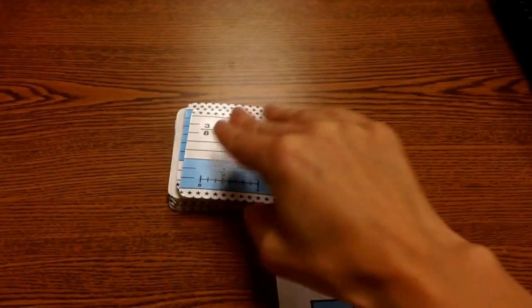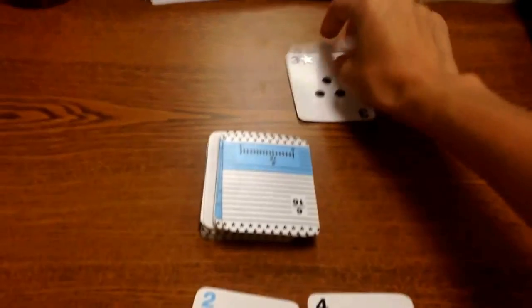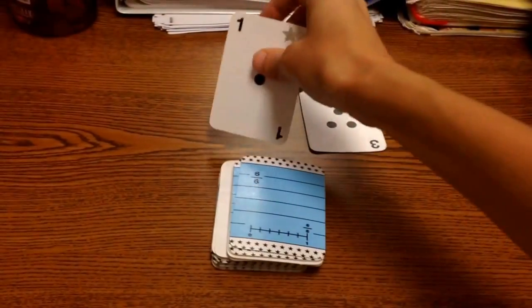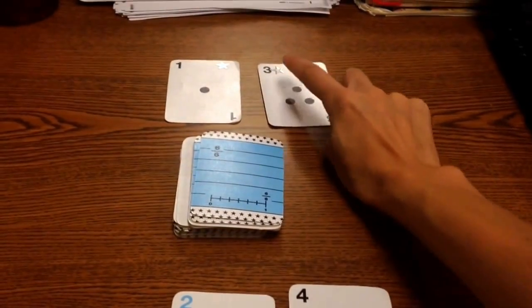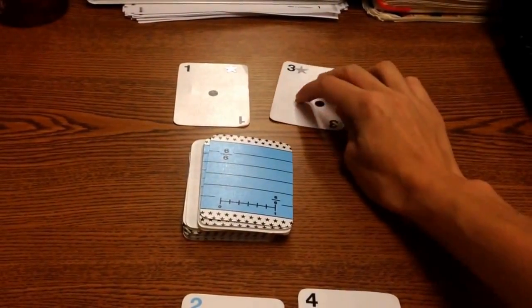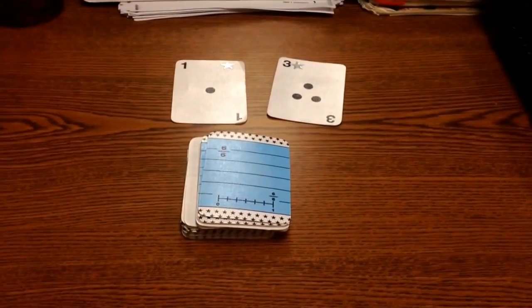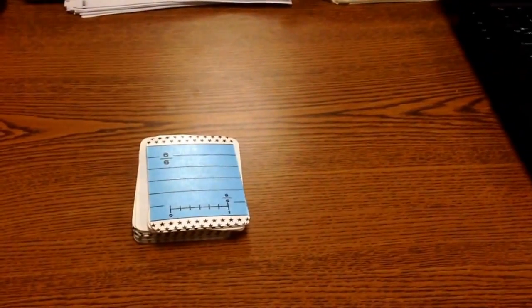Then, we draw again. My partner draws. I got 2 plus 4, which is 6. My partner got 3 plus 1, which is 4. I have the higher value again, so I get to keep all four cards.